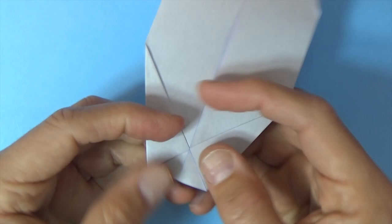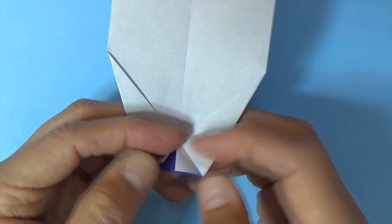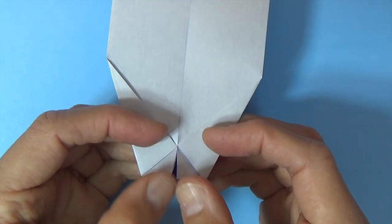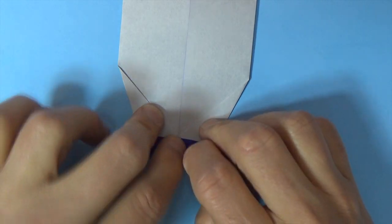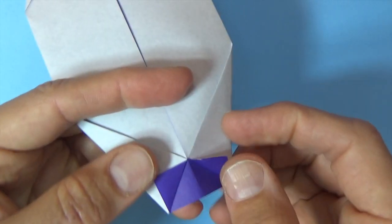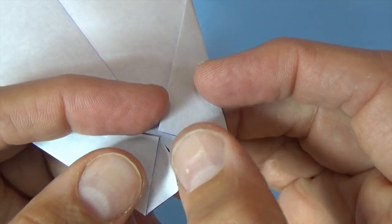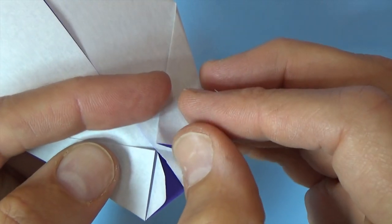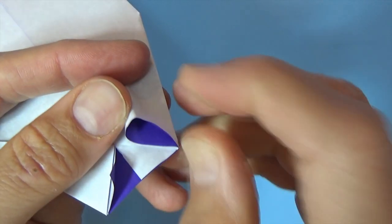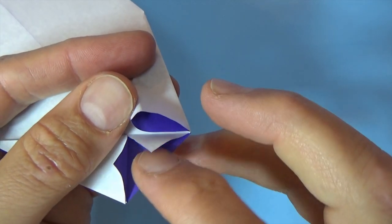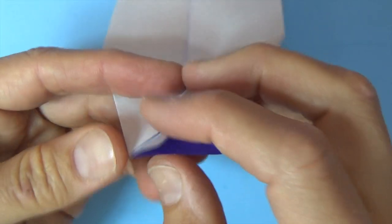So this edge aligns with this edge and this edge aligns with this edge. Also try to make the two points right here even like this. Okay, and now let's rotate and do the same thing on this side. Okay, now let's fold these two corners up like this, so we're just folding right over these edges.